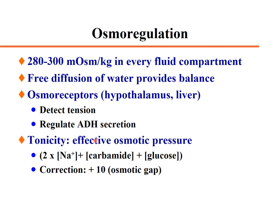Osmoregulation: plasma has about 280–300 milliosmol per kilogram in every fluid compartment. Free diffusion of water provides the balance. Osmoreceptors in the hypothalamus and liver detect osmotic tension and regulate ADH secretion.